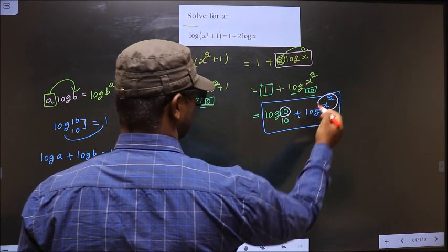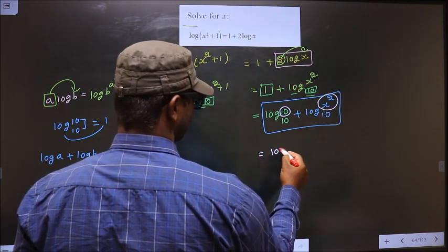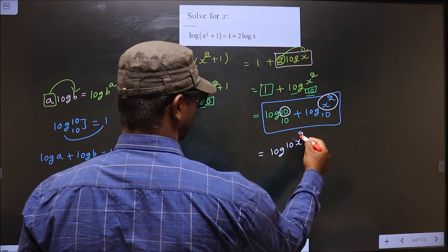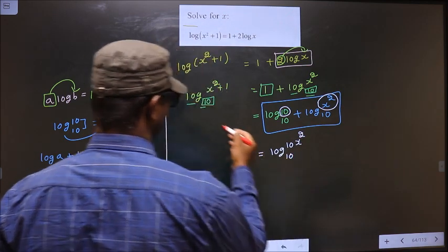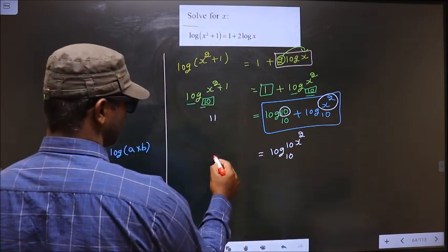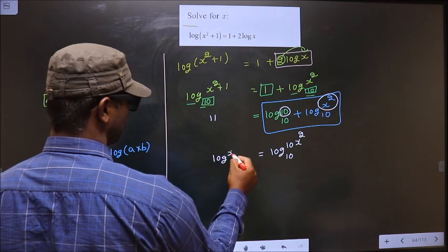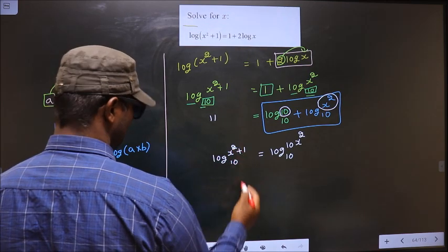In place of a you have 10, in place of b it is x². So you get log(10x²) base 10. This side, no change—as it is, you write (x² + 1) base 10.